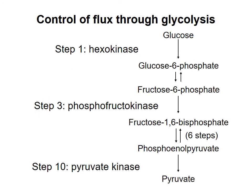These reactions are shown on the right side of the screen, and are catalyzed by three enzymes. To illustrate the regulation of glycolysis, I want to focus on the enzyme catalyzing the third reaction: phosphofructokinase. This enzyme is allosterically inhibited by ATP, and allosterically activated by ADP, AMP, and inorganic phosphate.